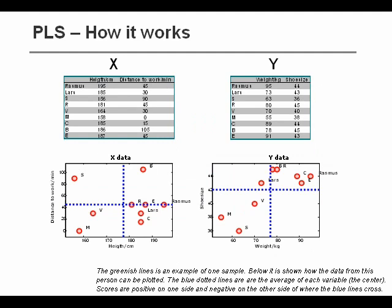Here we have shown the two data matrices in scatter plots. So to the left, we have the X block and to the right, we have the Y block. And we can see that each person is just a point in X space and a point in Y space.